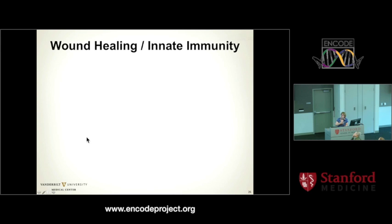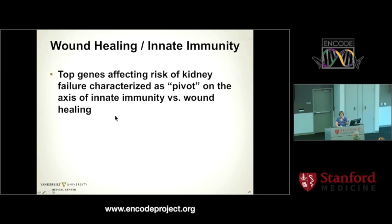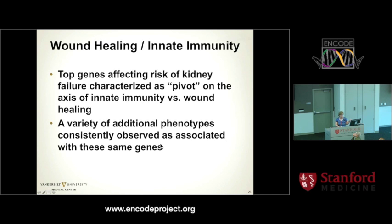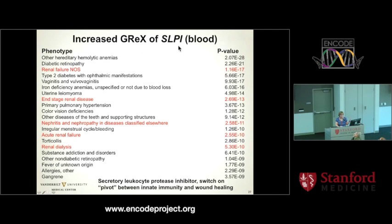As we went to 20,000 subjects, we replicate those general ideas but it's bigger than that. There are major biological axes that genes and diseases are piling up on. The top genes affecting risk of kidney failure are characterized as pivots on an axis of innate immunity and wound healing. A variety of additional phenotypes are consistently associated with these same genes, with consistency in both directions — certain phenotypes always on the same side with kidney failure, others always associated with the opposite end.